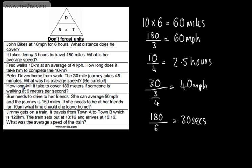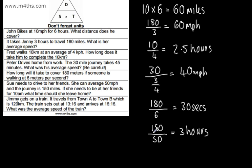Sue needs to drive to her friend's. She can average 50 miles an hour for the journey, and the journey is 150 miles. She needs to be at her friend's for 10 a.m. What time should she leave home? Time is distance divided by speed. The distance is 150, the speed is 50, and that gives 3 hours. So if she needs to be there for 10 a.m., she needs to leave at 7 a.m., since 3 hours before 10 a.m. is 7 a.m.